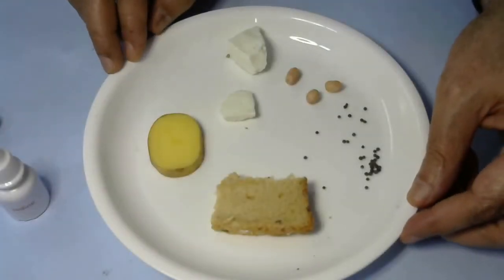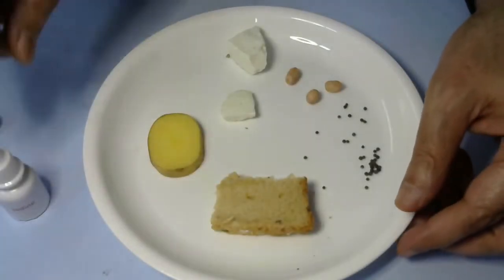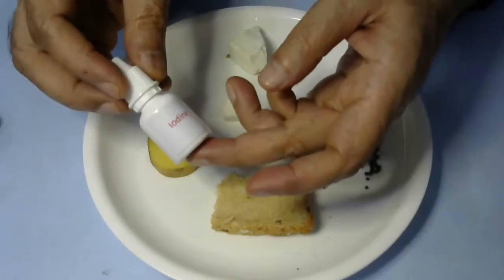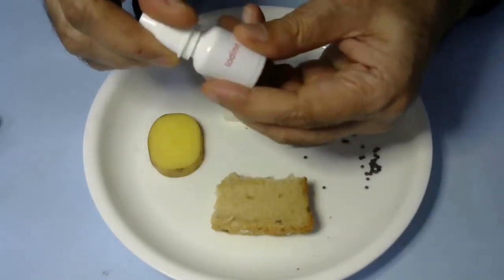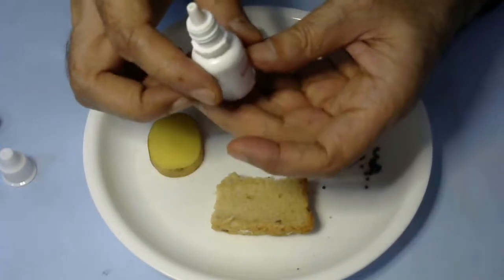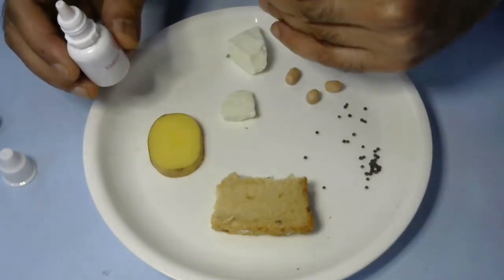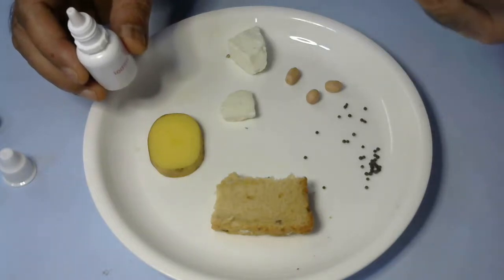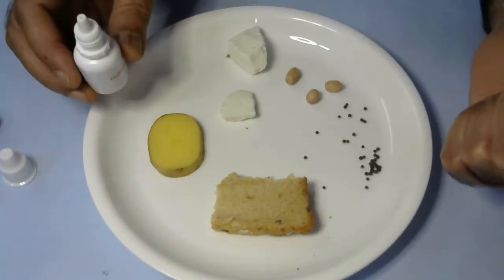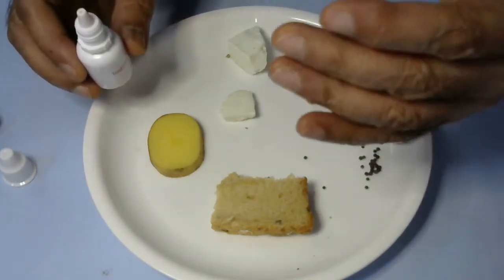Next, we will test starch in our food samples. For testing starch, we'll need iodine solution. Iodine solution is light brown in color. When you put iodine solution on any food sample, if it contains starch, the food sample will turn dark blue or black.